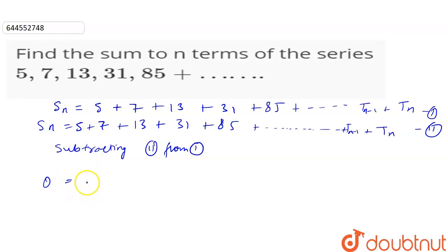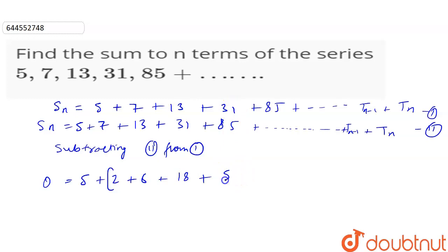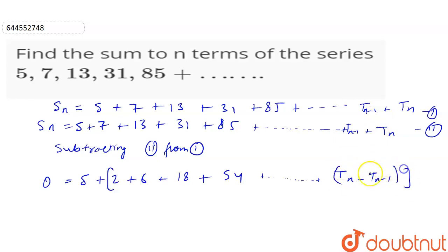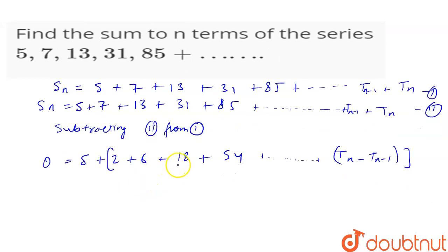The first term will be 5. Then 7 minus 5 is 2, 13 minus 7 is 6, 31 minus 13 is 18, 85 minus 31 is 54, and so on till Tn minus Tn minus 1. At last, we can write this as minus Tn.